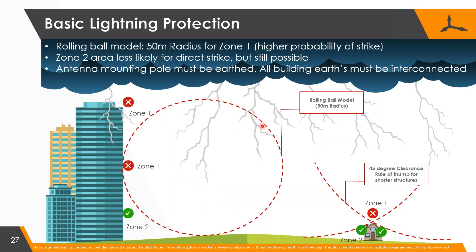On the topic of lightning, the best model to describe it is the rolling ball model. For short structures, this gives you the 45-degree rule people have used for years - wherever the ball touches, lightning can hit. If you look at this rolling ball rolling up a building, lightning can hit anywhere, even lower floors. We've had high-rise buildings where the fourth floor down gets hit by lightning. Once a building is more than about 50 to 60 meters high, if it's a small tower of 20 or 30 meters, you can see it's fine.